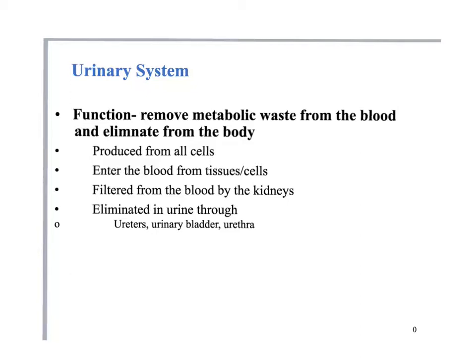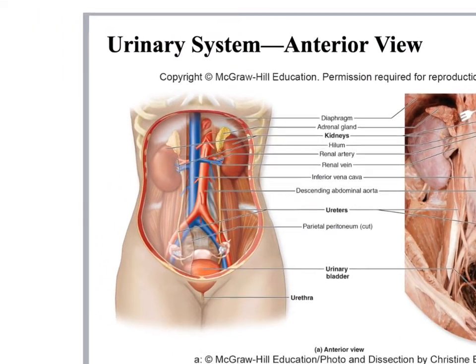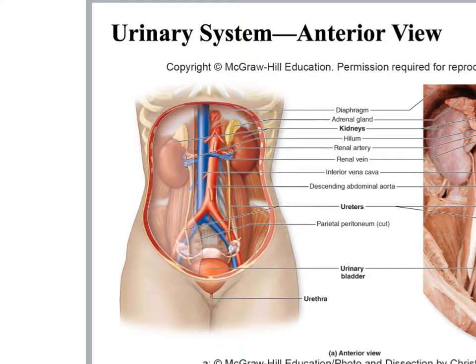The kidney does the work of filtering and removing the wastes. The ureters transport that waste, the urinary bladder stores it, and then it's removed through the urethra. The urinary system consists of two kidneys, two ureters, a bladder, and a urethra.